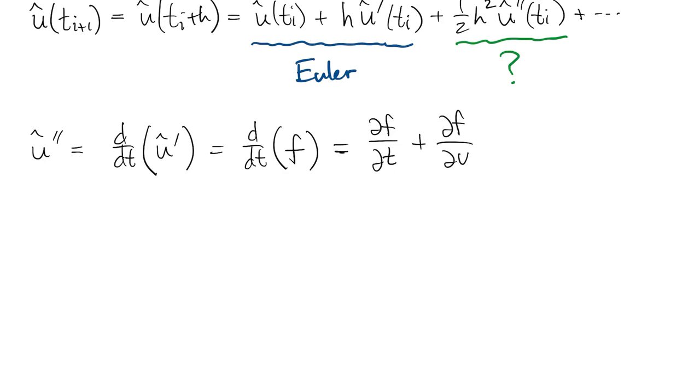f depends directly on two things, t and u, so we have to use the multidimensional chain rule to write out the total derivative of f. Using subscripts for the partial derivatives of f, we can also put in the fact again that du-dt is equal to f when we evaluate at u equal to u-hat.